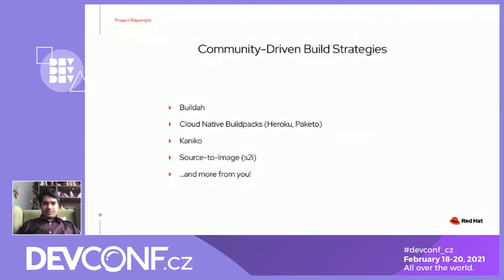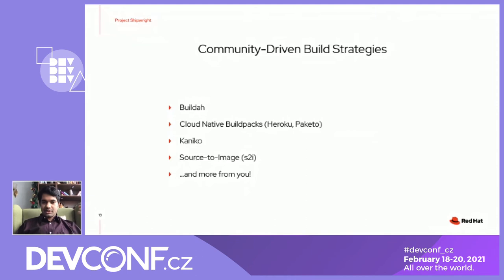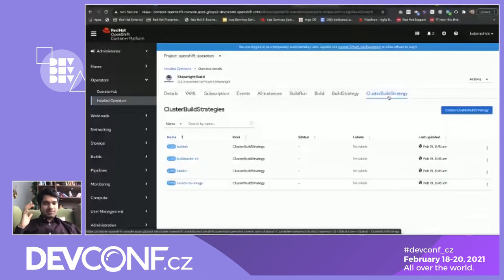I'm on an OpenShift cluster right now. To be clear, this is because I had an OpenShift cluster available — you could do the same thing on plain vanilla Kubernetes as well, not just the Red Hat distribution. So if I go to my build strategy, you can see that I've got four CRs here: Buildah, buildpacks v3, Kaniko, and source-to-image. At this point, the admin has enabled these four build strategies. They are simple CRs. You can see diverse vendors as well as diverse mechanisms of building images represented here.